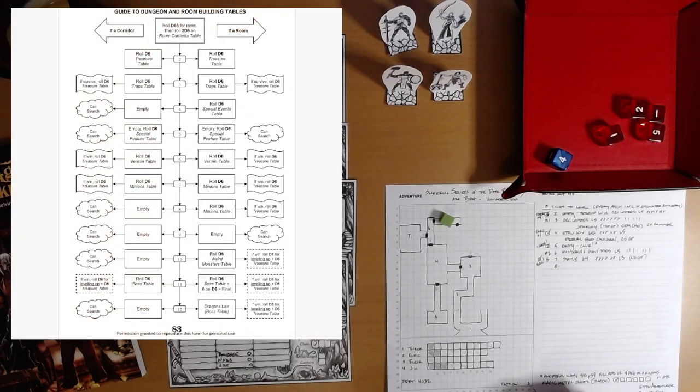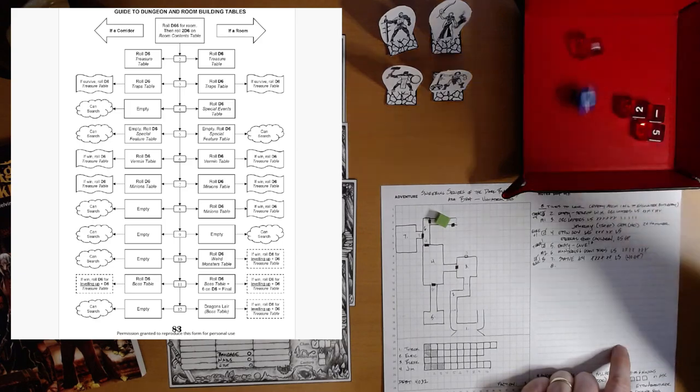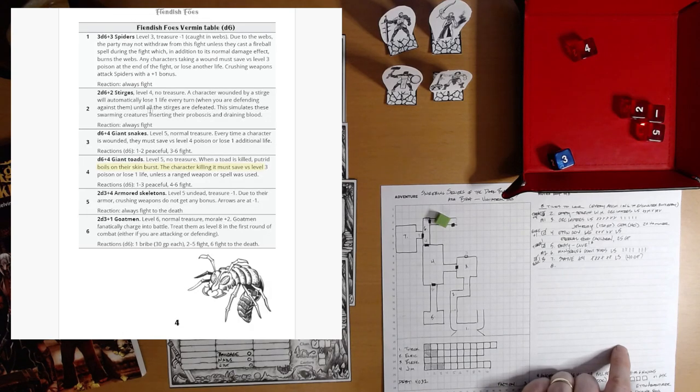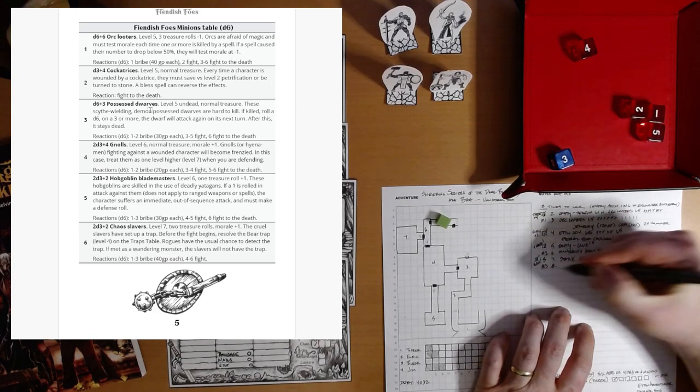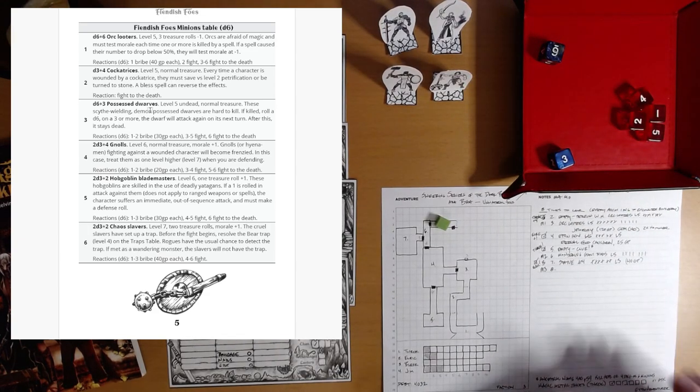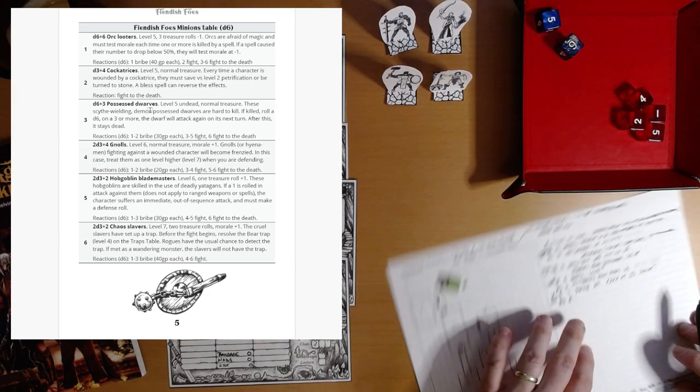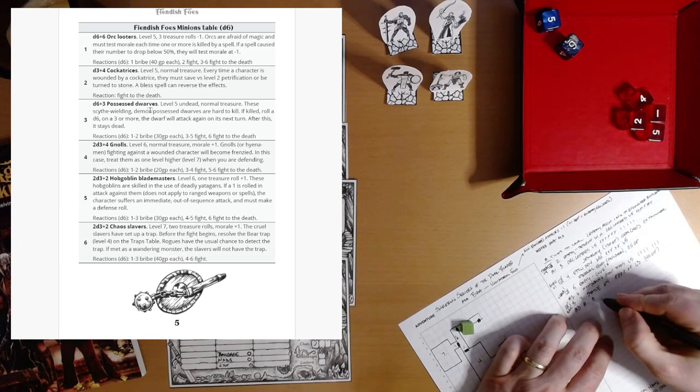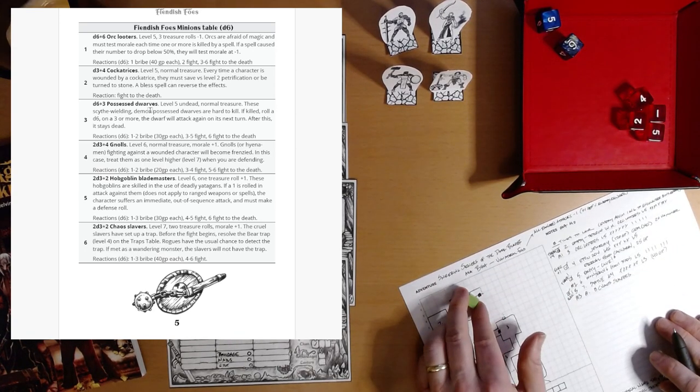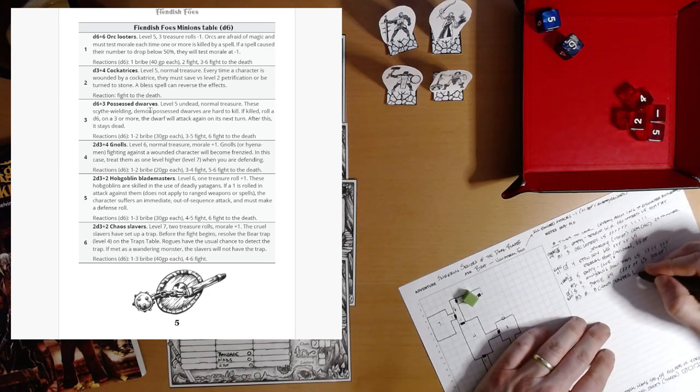This is corridor tile number eight. What do we have going on in the corridor? Seven and a corridor. We've got minions. Roll a d6 minions table. Fiendish foes minions. We add one to our minion count. Three. And the actual minions that are here are chaos slavers. We're going to roll 2d3 plus two. That's six, seven, eight chaos slavers. Eight chaos slavers hanging out in the corridor.